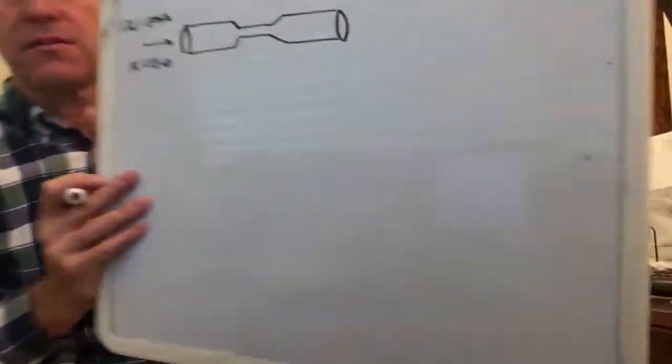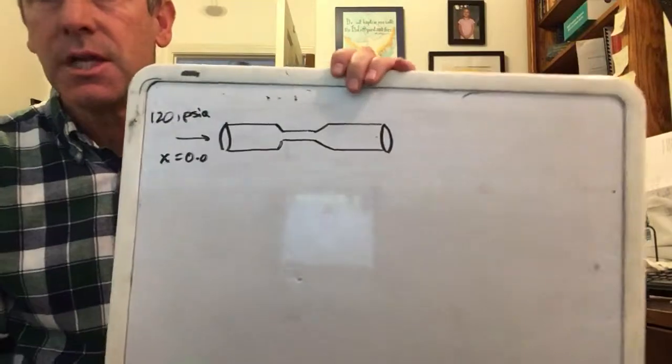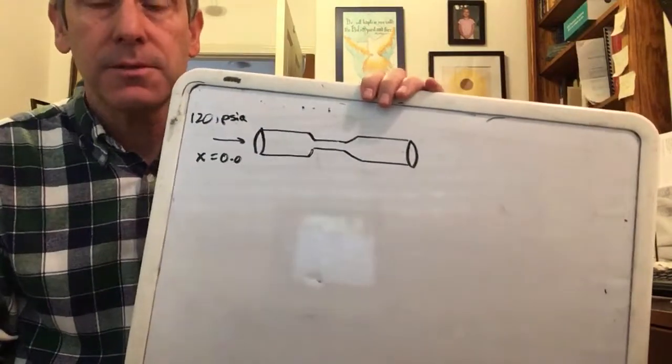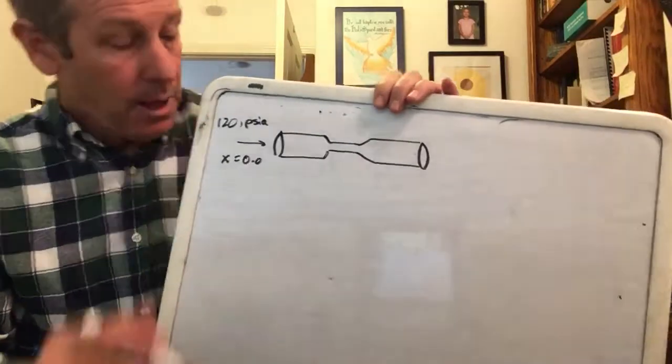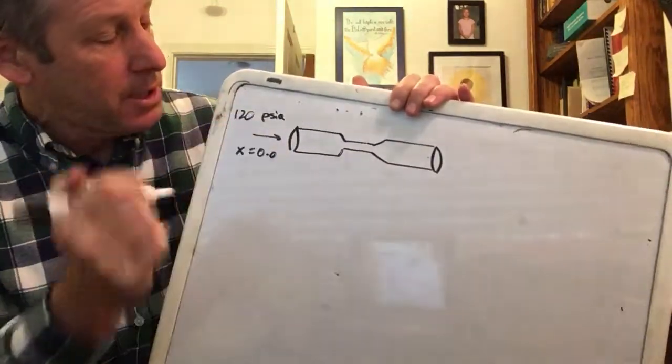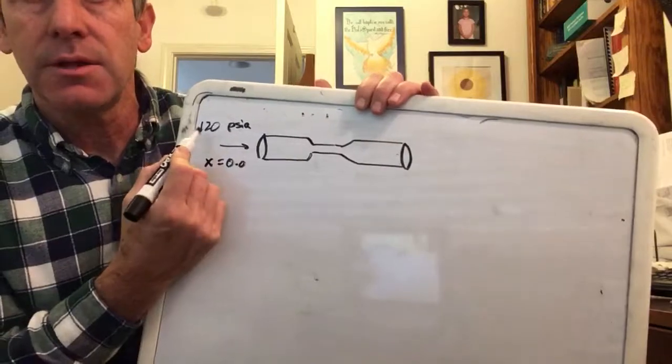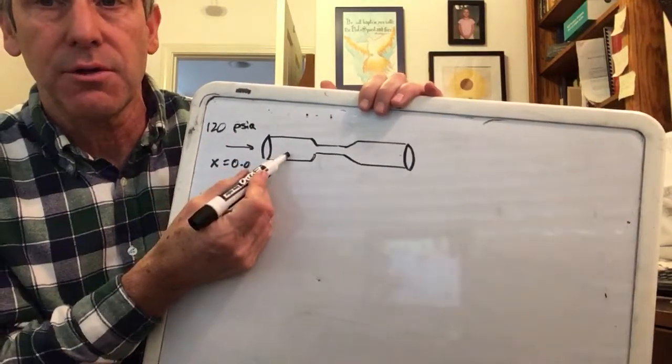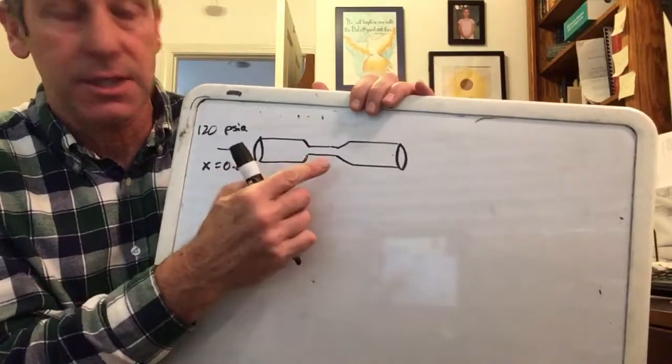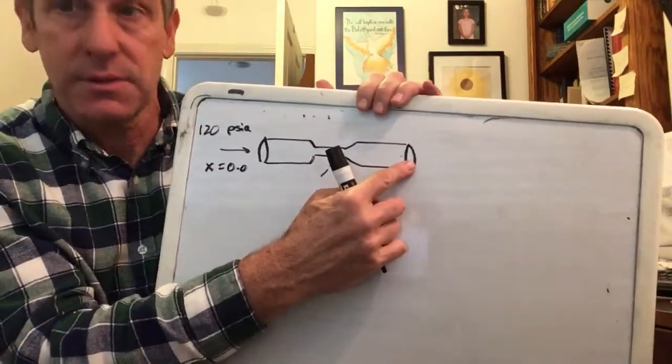Here's the inlet conditions. We've got pretty high pressure, 120 psia, and we got a saturated liquid coming in. That's what I said earlier: if you can have a tank with R-134a at pretty high pressure and a saturated liquid, and then you put it through a throttling valve, it's going to work.